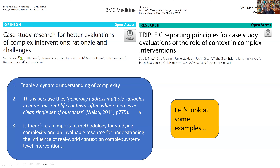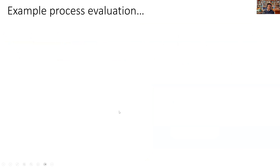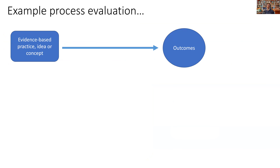Let me look at some examples to bring this to life. An overview of a process evaluation: traditionally, an evidence-based practice would be implemented over a year or more, and at the end an evaluation team would produce a report saying whether it was implemented, where it was implemented, using Proctor's measures — was it acceptable, did it have fidelity, what was the cost? Maybe applying a framework to know barriers and facilitators. But knowing those things doesn't tell anyone in the future how to implement this.